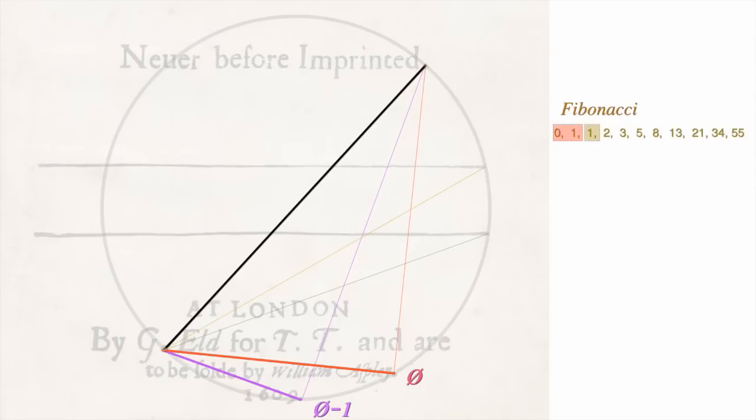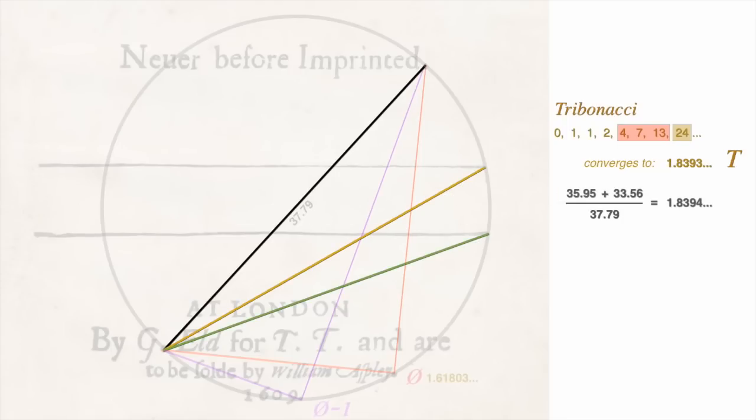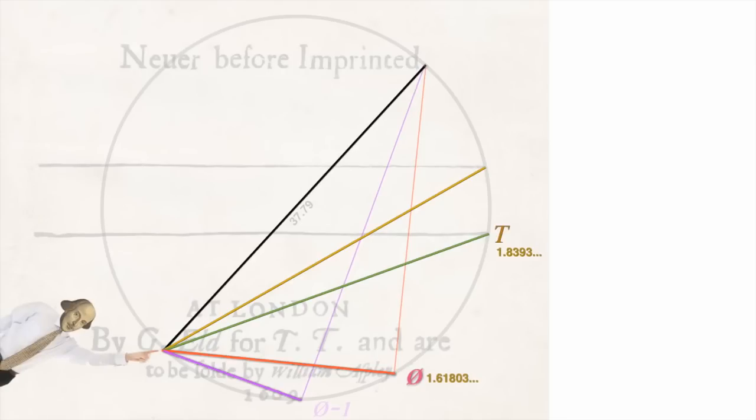The Fibonacci series, it's derived by adding two consecutive numbers to get the third, and repeating the process ad infinitum. The ratio of the last two numbers eventually converges to 1.61803. But there's a variant of the Fibonacci series called the Tribonacci series, which is derived by adding three consecutive numbers to get the fourth, and repeating the process ad infinitum. The ratio of these last two numbers converges to 1.8393, and its symbol is t. This phenomenon wasn't even studied so far as we know until about 1914, and yet here it is on the sonnet.